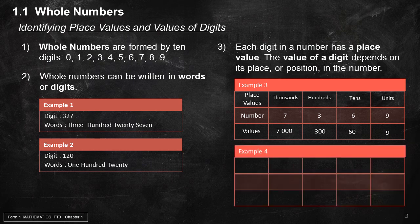Example 4 — number 805: the place value of 8 is hundreds, value is 800; the place value of 0 is tens, value is 0; and the place value of 5 is units, value is 5.